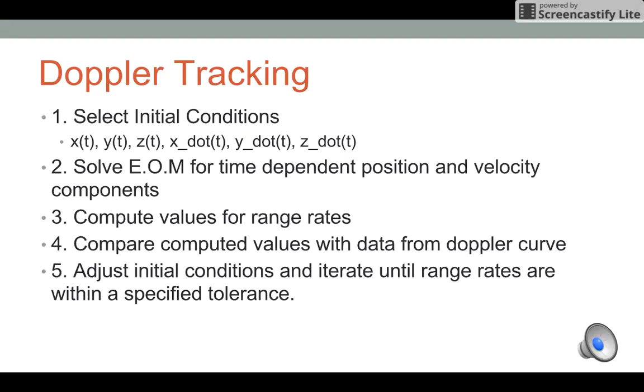For Doppler tracking, the solution method is as follows. You select your initial conditions, where you guess your position x, y, and z, and your velocity x dot, y dot, z dot. From that, you utilize equations detailed in Paul Richard's journal article, where you solve the equations of motion for those time-dependent position and velocity components.